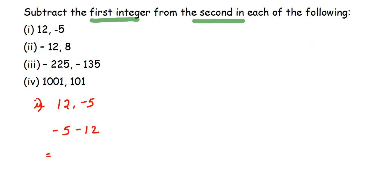Both integers here are negative, so same sign means we add them: 15 plus 5 is 20, and the sign will be the same — both have a negative sign — so the answer is minus 20.